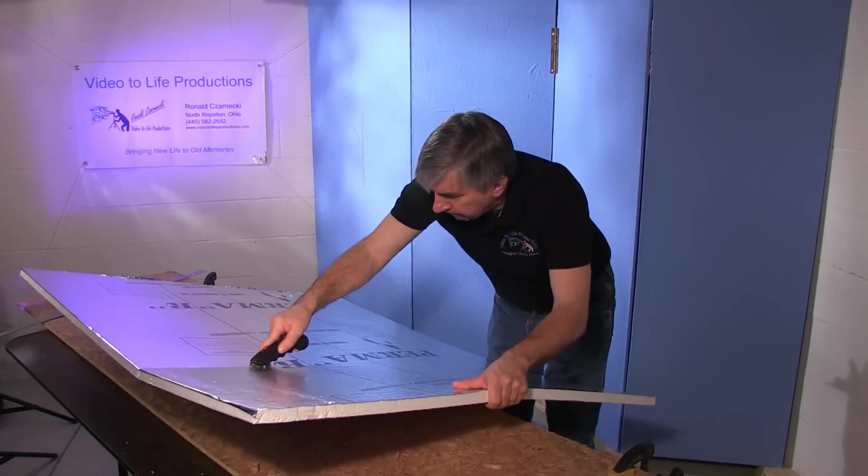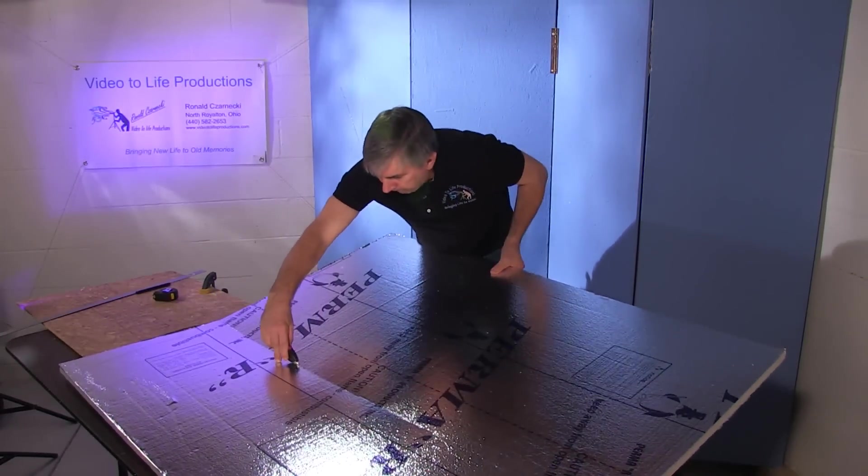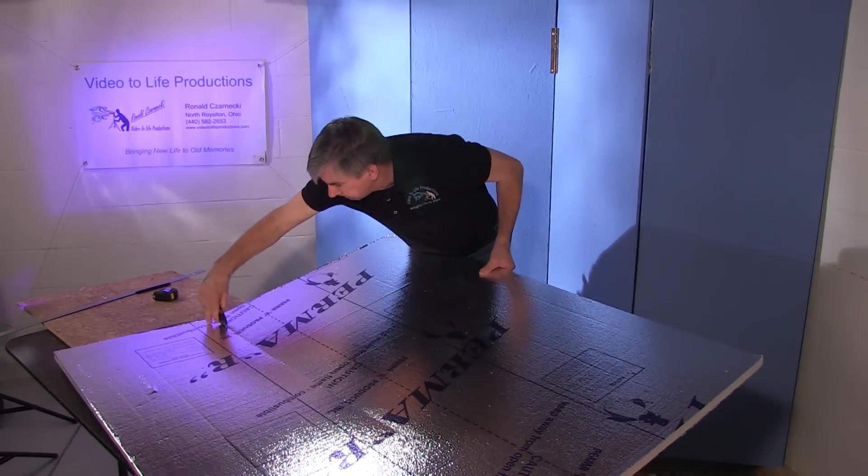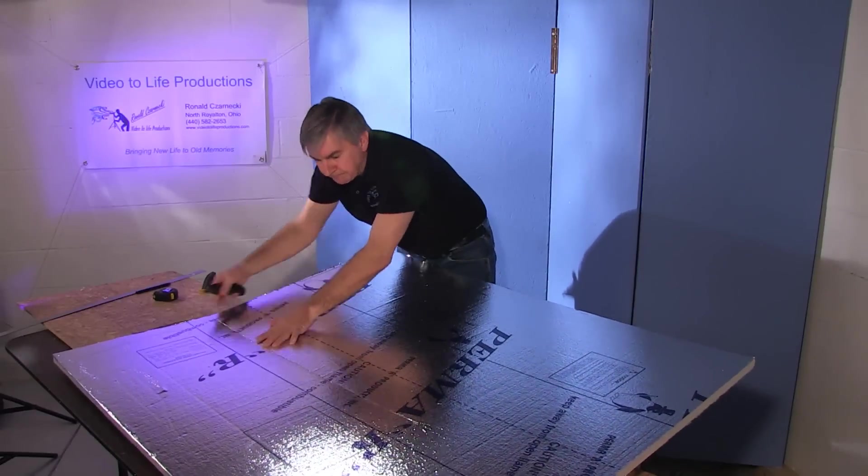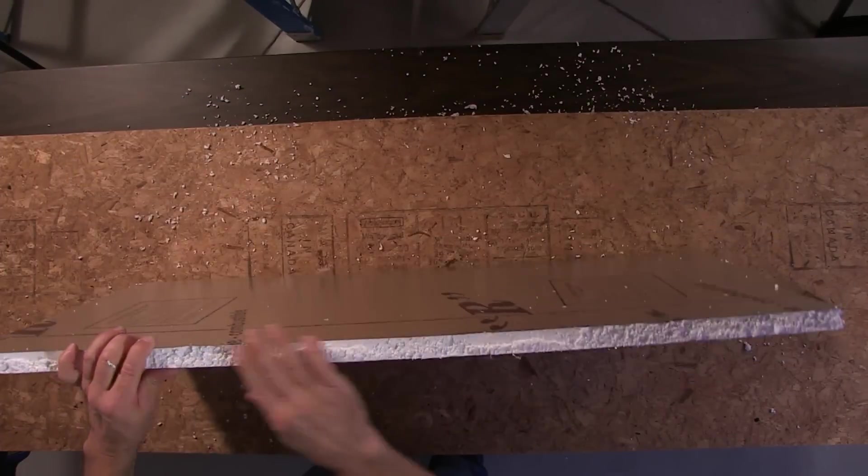Now we're going to score just the foil. Try to keep as much of this foil on the foam as possible. Good heat resistance. So there, now you have your first piece, the base.